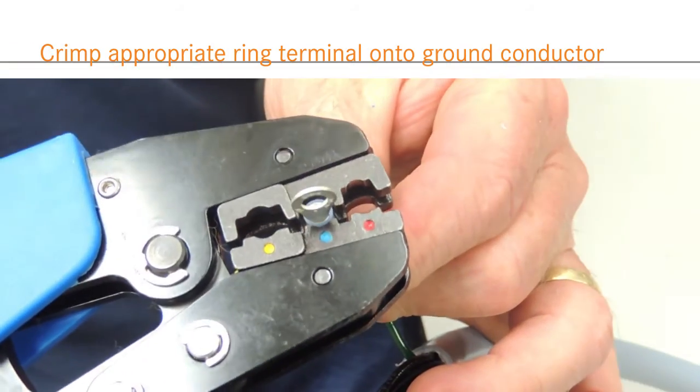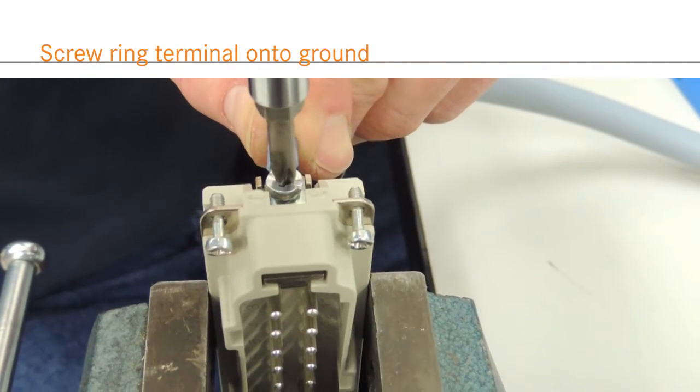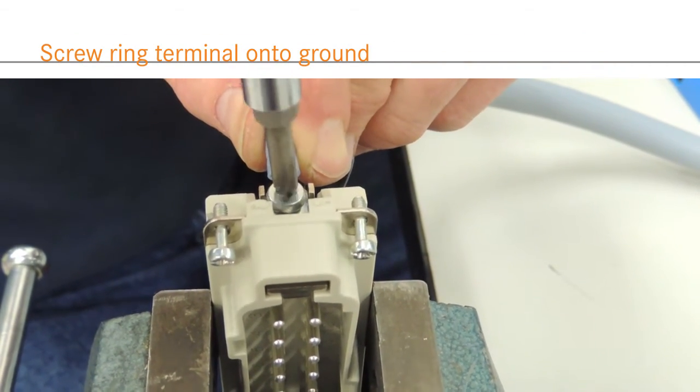Terminate the ground with the appropriately sized ring terminal and crimp tool. Wire the ground by fixing it in place with the ground plate and screw.